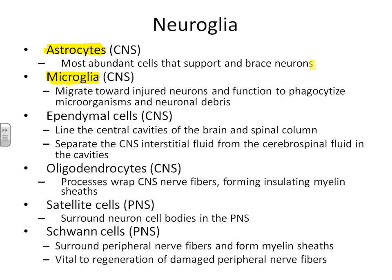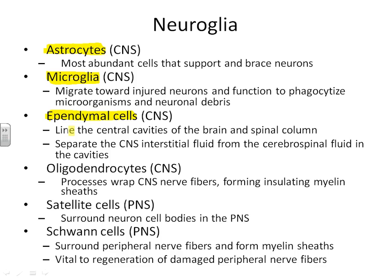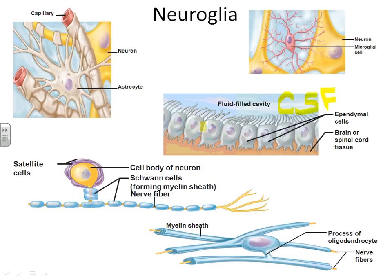The third type of neuroglial cell is called an ependymal cell. Ependymal cells line all of the fluid-filled cavities in your brain and spinal cord, and they actually produce the fluid that goes into these cavities. That fluid is known as CSF — cerebrospinal fluid. It's not just spinal fluid; you have it in both your brain and spinal cord, and wherever it needs to be made, ependymal cells line that cavity.